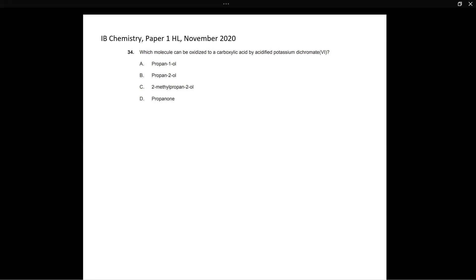So this question asks us, which molecule can be oxidized to a carboxylic acid by acidified potassium dichromate? Now, potassium dichromate is an oxidizing agent, meaning that it gets reduced in order to oxidize another substance.